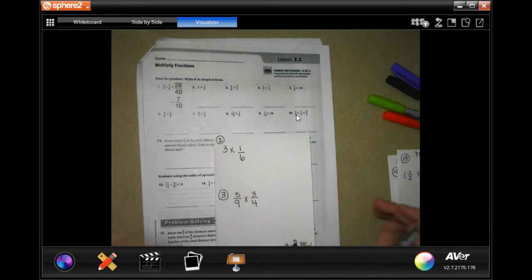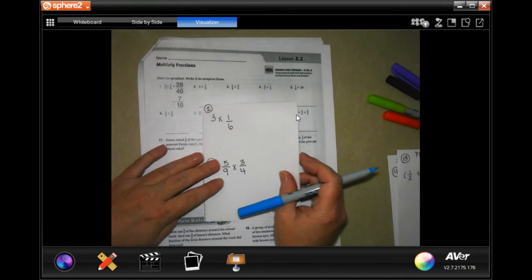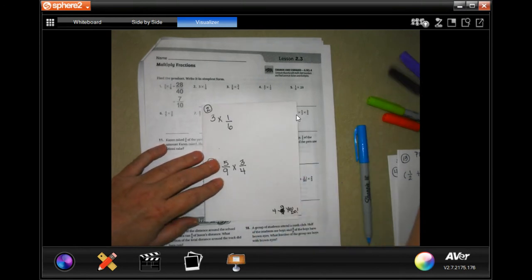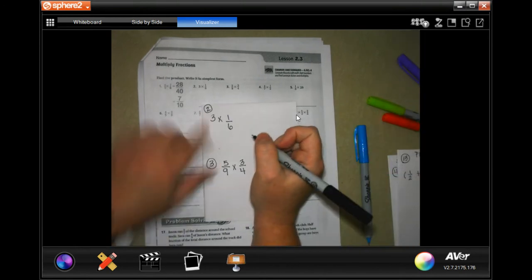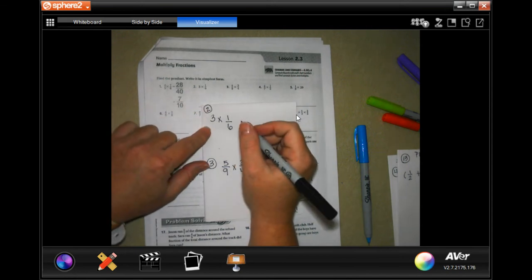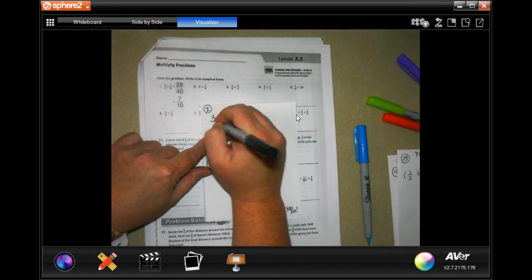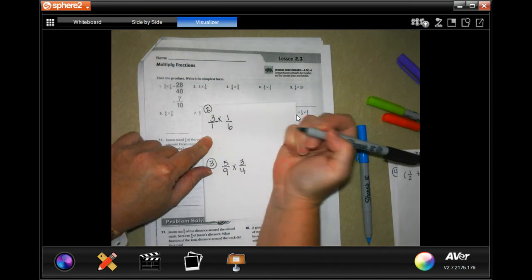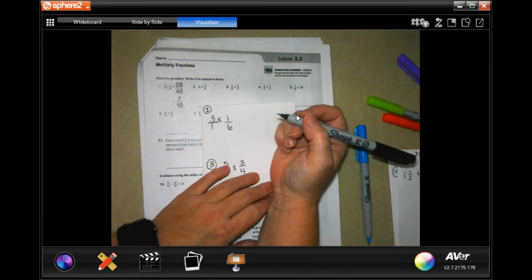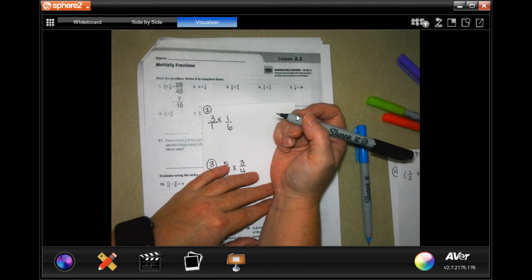Miss Lee loves fractions. She could do them all day long. They're amazing, they're super fun for math nerds. It says 3 times 1/6, and I want you to write it in simplest form. So 3 is not a fraction. Can't do this unless it's a fraction, so just put it over 1, because 3 over 1 is equal to 3.